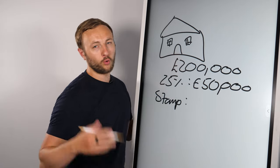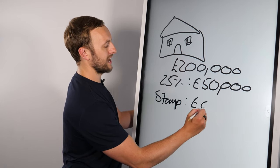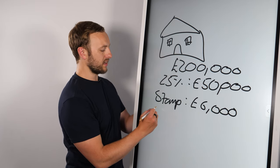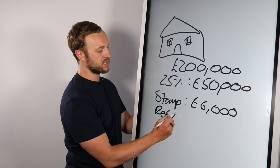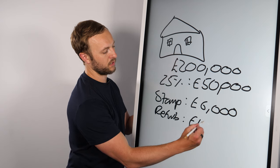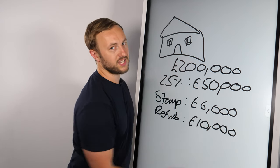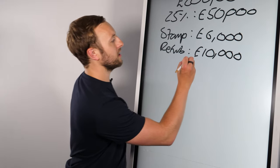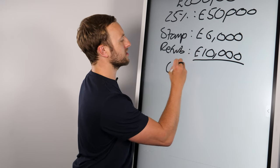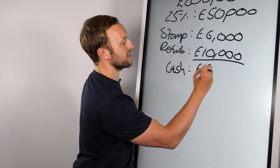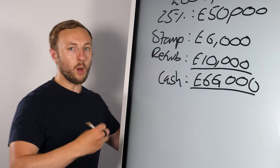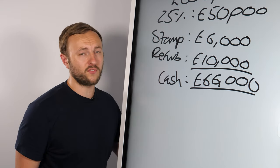Then you've got your stamp duty on that, which for ease I'm going to call 3%. So that's £6,000, actually a little bit more than that. And then let's say there's the refurb and fees, whatever it is, at £10,000. Now these are just example numbers. They're not to be used seriously. That means the cash going into this property is £66,000. So not a bad amount of money, a decent chunk of cash going in.